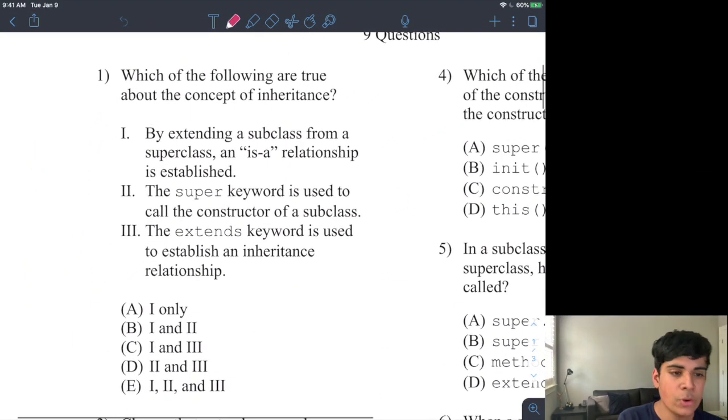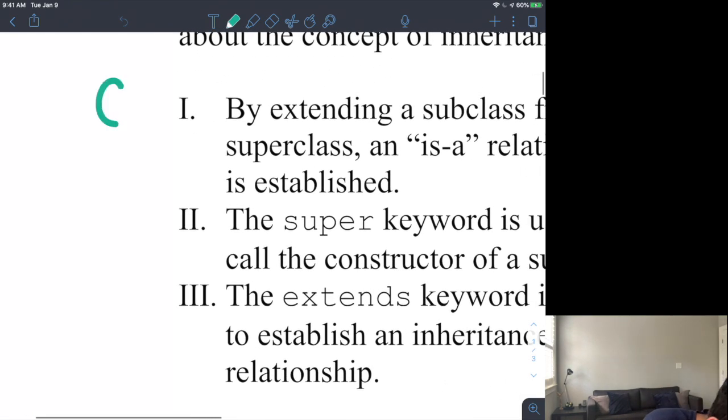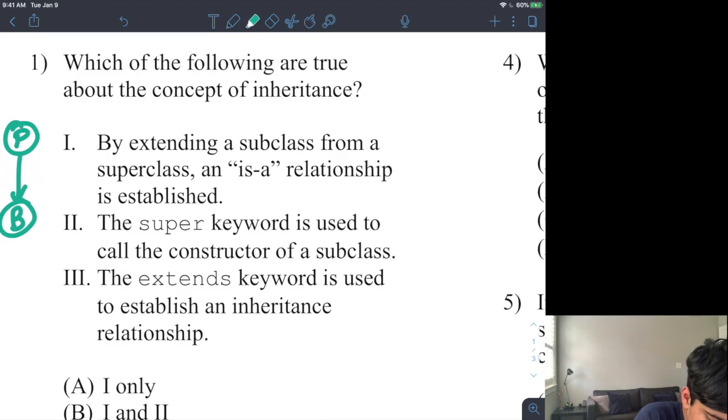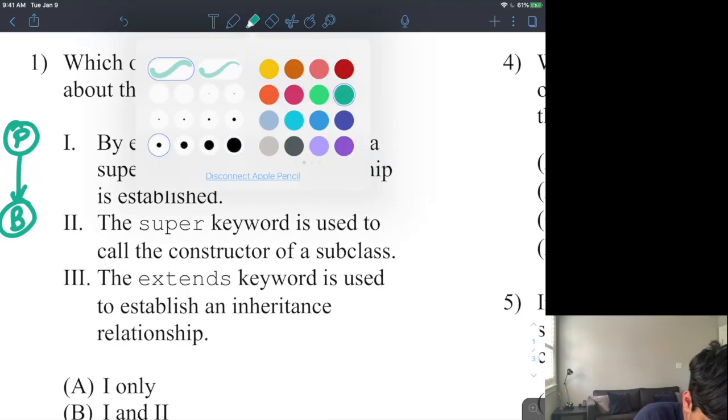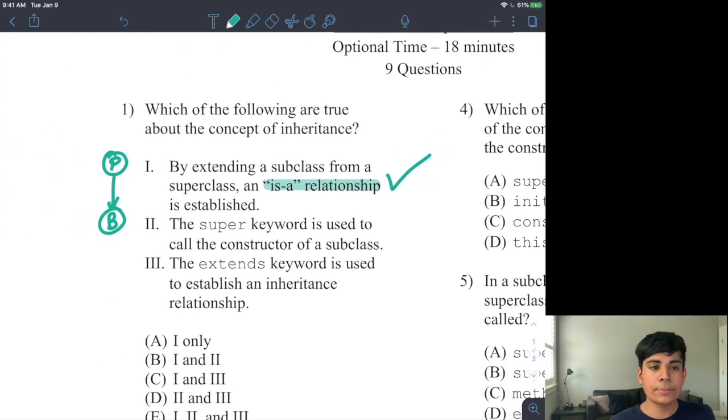Question one asks which of the following are true about the concept of inheritance. The first thing it says: by extending a subclass from a superclass, an is-a relationship is established. I'm taking a superclass, which I'll label with a P for super, and then this is going to have a subclass below it. An is-a relationship is established. This is true because the subclass is a type of, or the subclass object is a type of the superclass object.